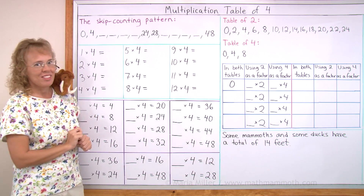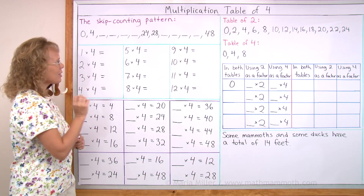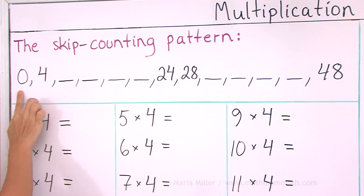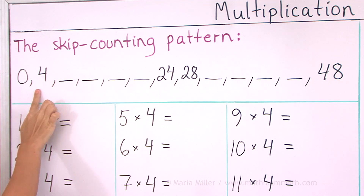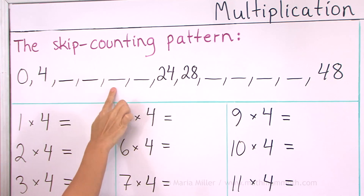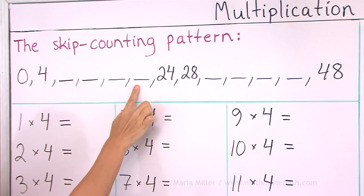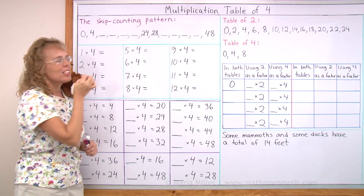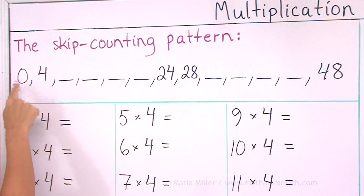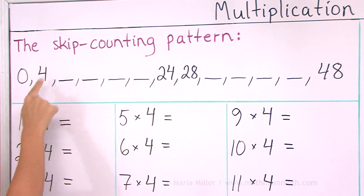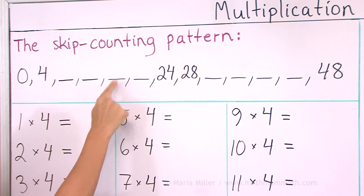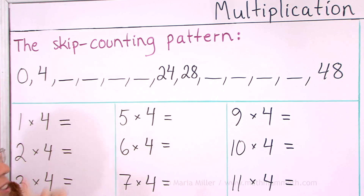I haven't filled it in, but I will tell it to you, so listen carefully. 0, 4, 8, 12, 16, 20, 24. Let's just go up the halfway first. 0, 4, 8, 12, 16, 20, 24.